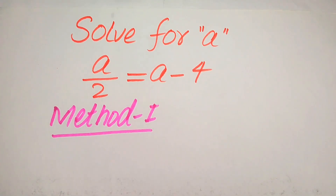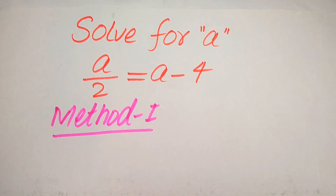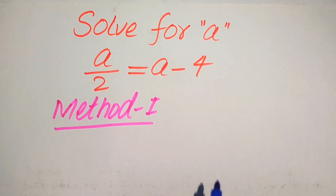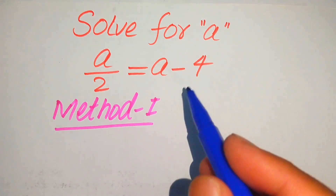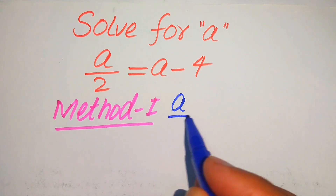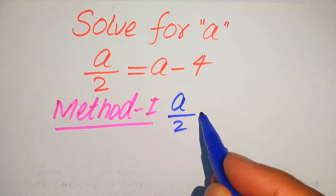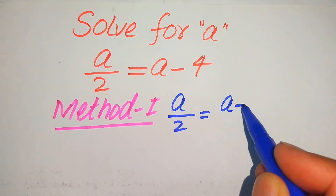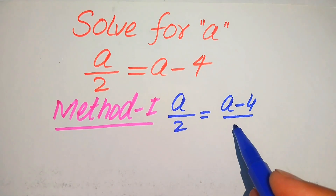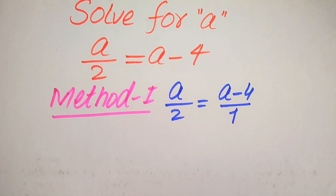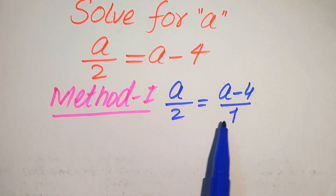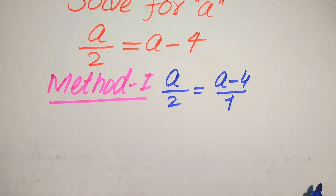Now we start the solution from the first method. In the first method, the numerator of the right-hand term is 1, so it can be written as a over 2 is equals to a minus 4 divided by 1. You know that if any digit or variable has no denominator, its denominator is equals to 1.